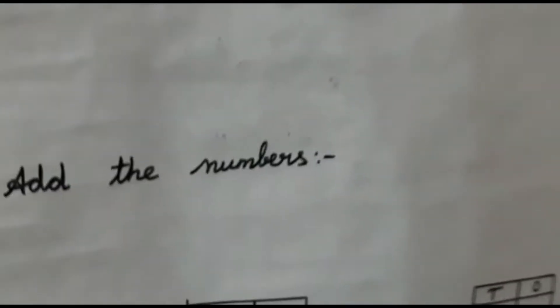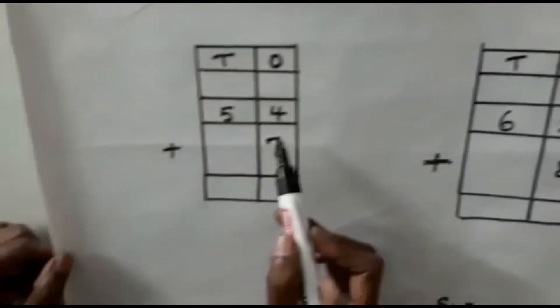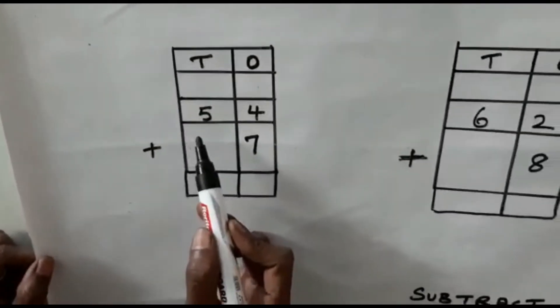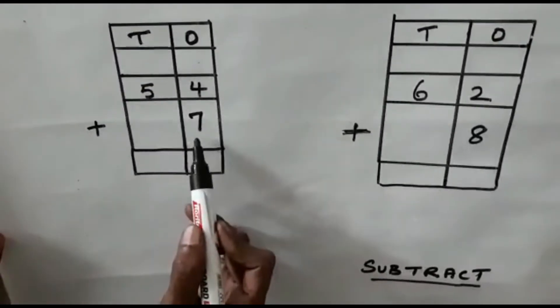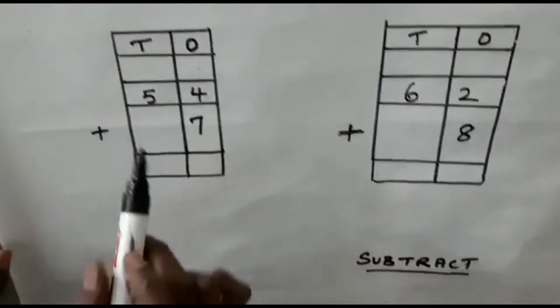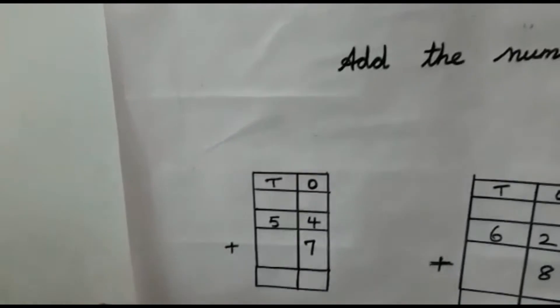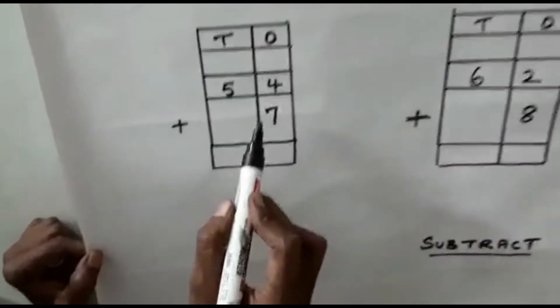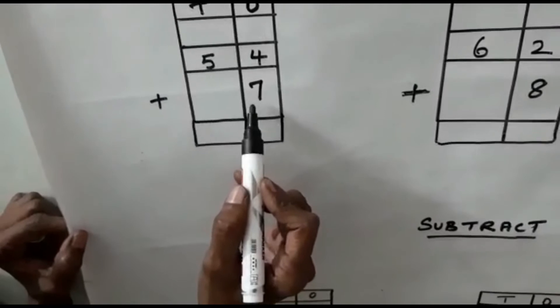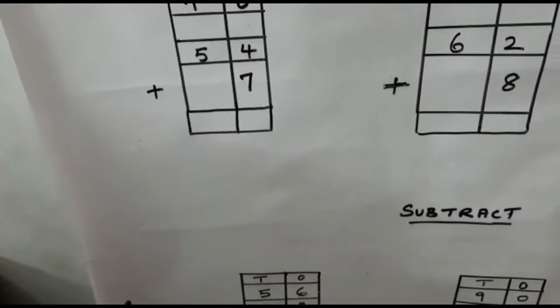Now we are going to see addition of numbers with carrying. Here on the ones side we can see 4, and on the tens side you can see 5. Then again on the ones side, 7 you can see. Now we are going to carry — this is the carrying sum. Now 4 plus 7: 7 is the biggest number, so keep 7 in your mind.